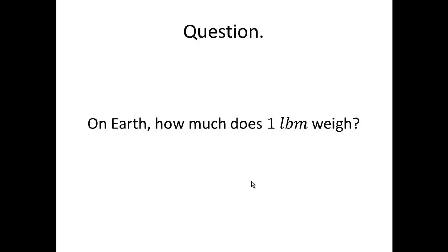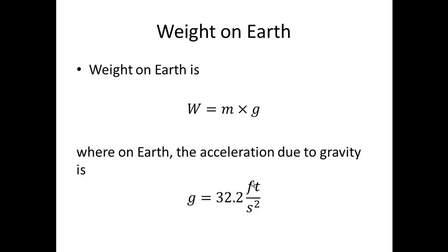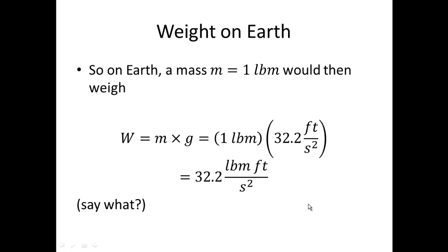Question. Returning to my question: on Earth, how much does 1 pound mass weigh? Weight on Earth is equal to mass times gravity, g. Where on Earth the acceleration due to gravity is 32.2 feet per second squared. So on Earth a mass of 1 pound mass would then weigh 1 pound mass times 32.2 feet per second squared. Say what?